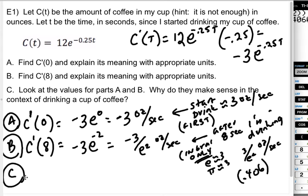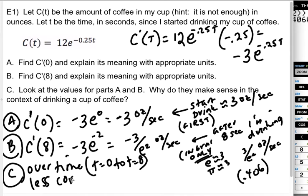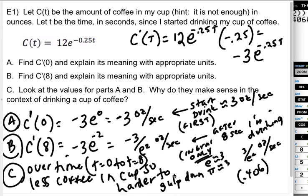So why does that make sense? Well, it's harder to drink as fast when there's less coffee in my cup. So over that time, from T is 0 to T equals 8, there's less coffee in my cup, it's harder to chug. So it's harder to gulp down my coffee. There's less in there. I'm at the point where I'm trying to conserve what coffee I have left as the cup gets closer and closer to empty. And so I'm drinking more slowly at that point.